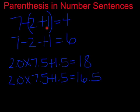That's because anything that's inside of the parentheses must be done first in an expression. So in this case, 2 plus 1 has to happen before we subtract anything from 7. 2 plus 1 is 3, and 7 minus 3 is 4, making this number sentence true.